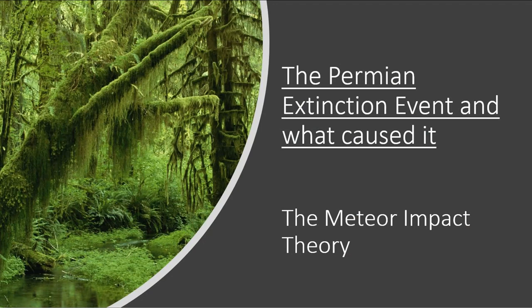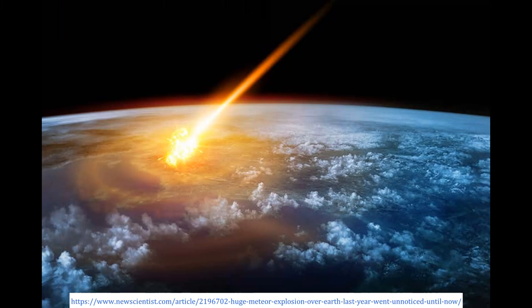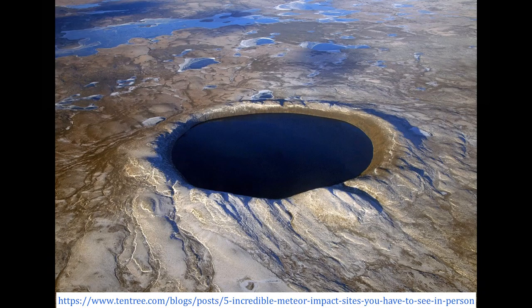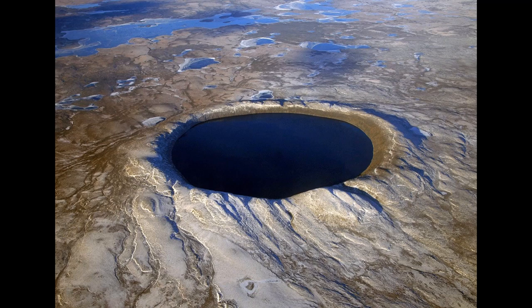The Permian extinction event and what caused it? The Meteor Impact Theory. When talking about the Permian extinction event, two major theories take the spotlight. The first is the Meteor Impact Theory, which suggests that a large asteroid between 6 to 12 kilometers in diameter struck the planet and triggered long-term global warming, resulting in the Permian mass extinction event, much like what happened to the dinosaurs 65 million years ago. However, there isn't any tangible evidence backing this theory — in fact, there is more against it. For instance, there is no suitable crater that has been found that has both iridium and shocked quartz present, both of which indicate an asteroid impact.